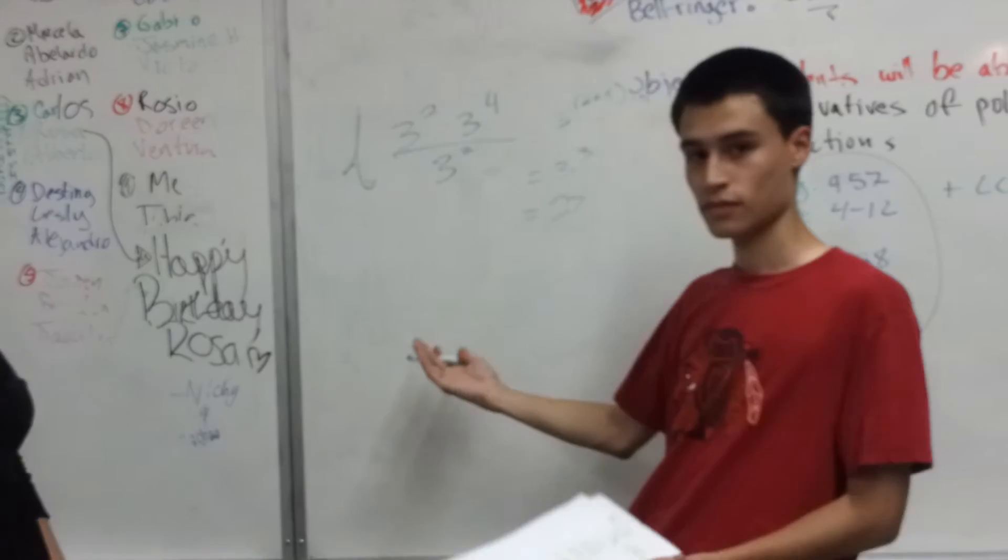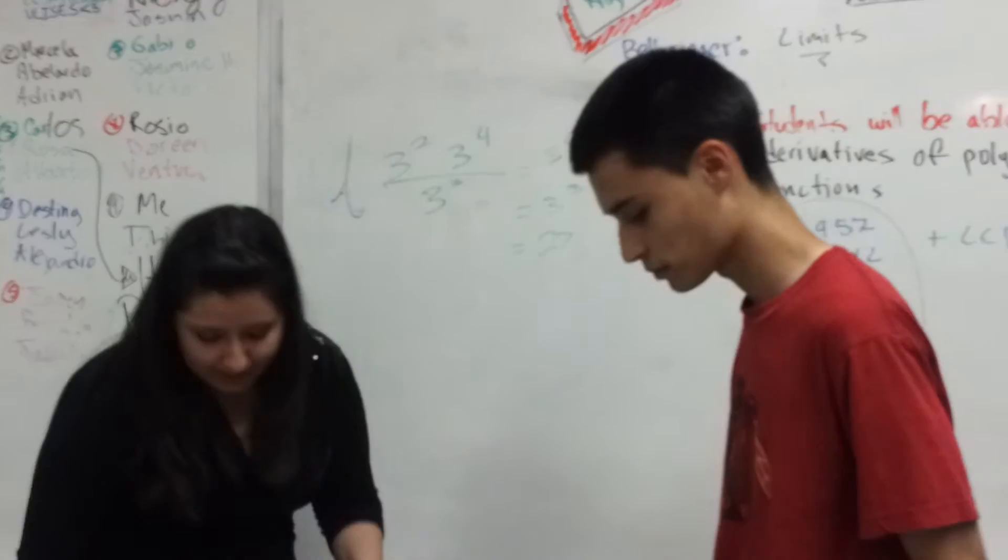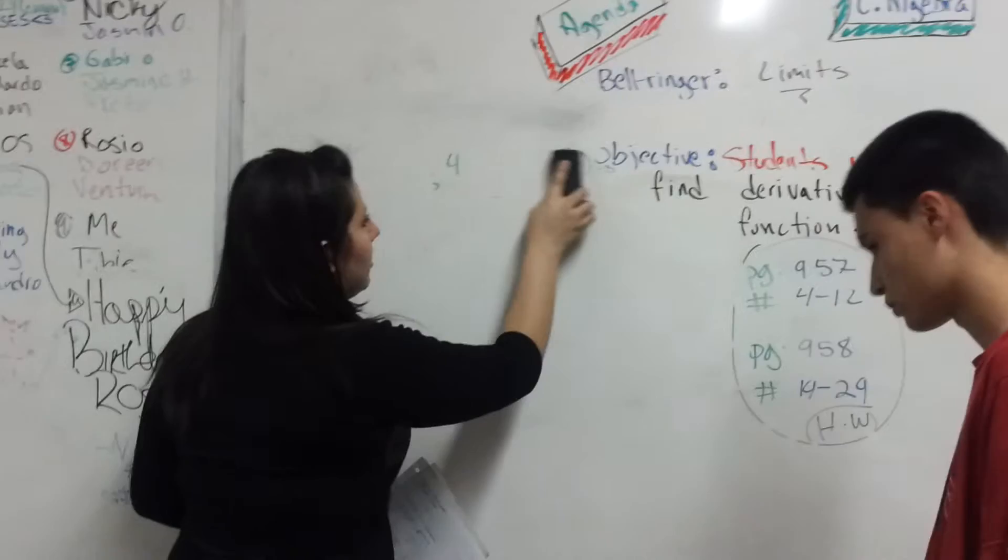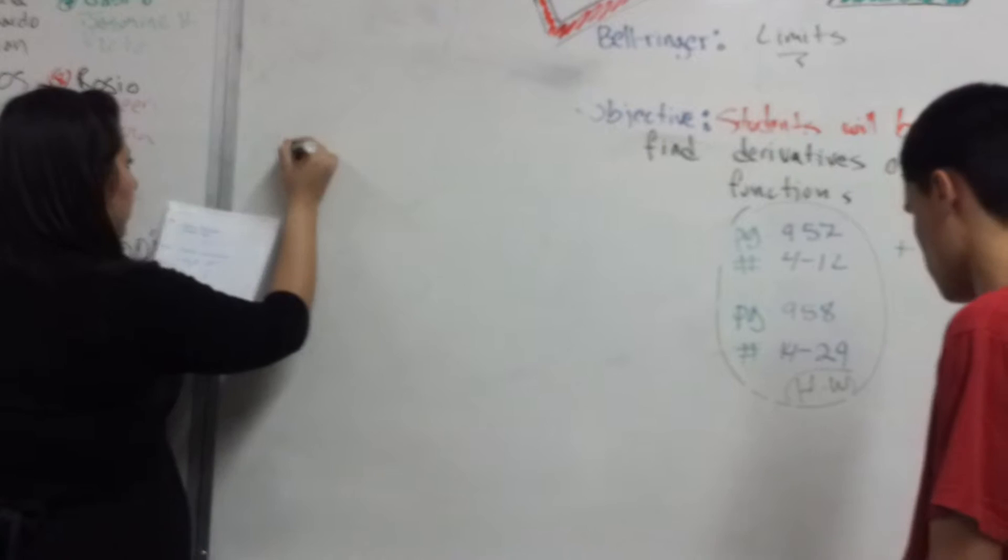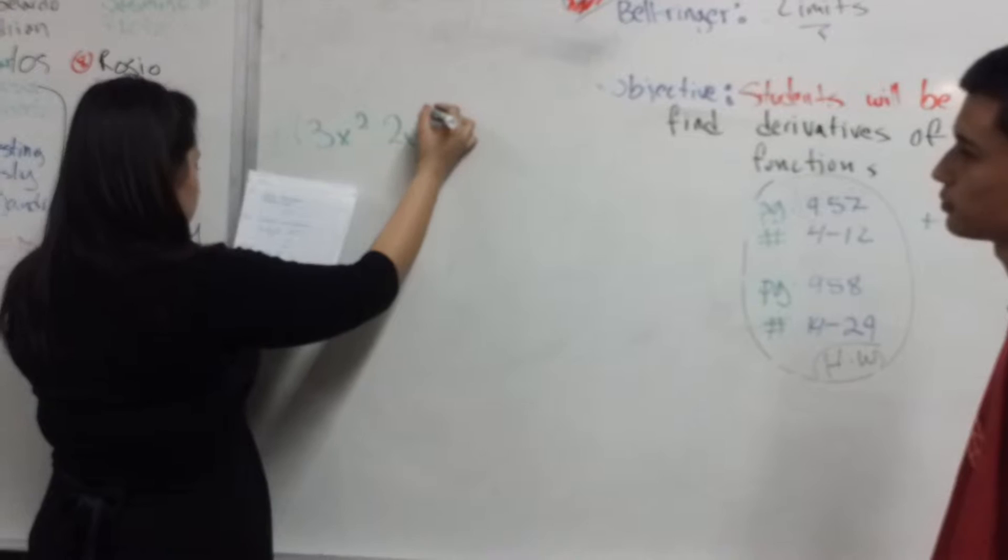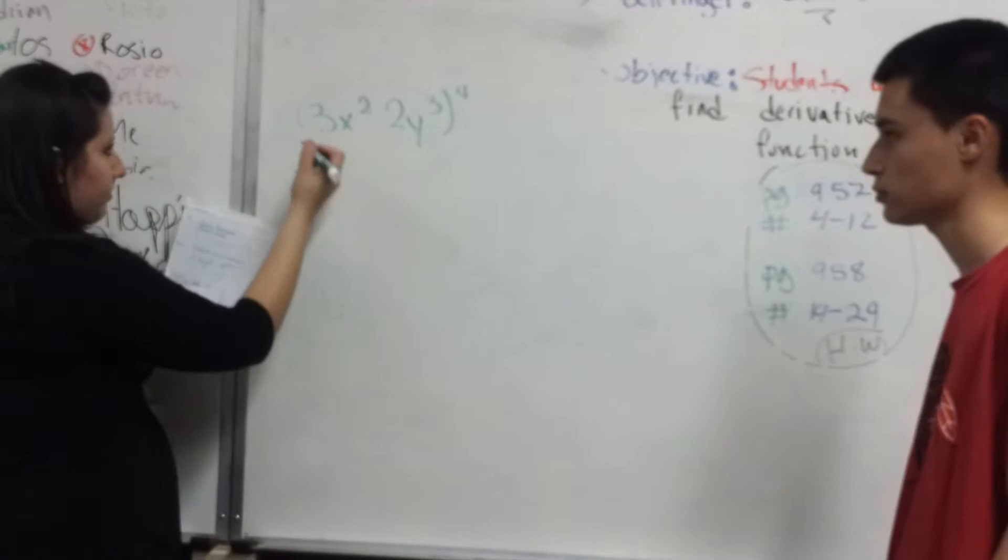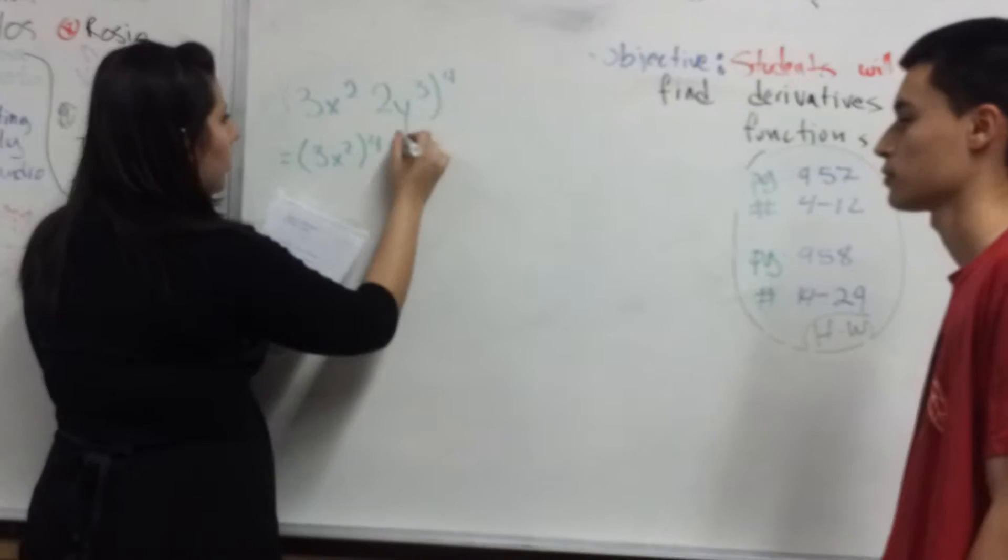The second example will be: simplify the expression, which is 3x squared and 2y to the fourth, which equals 3x squared to the fourth and 2y to the fourth,